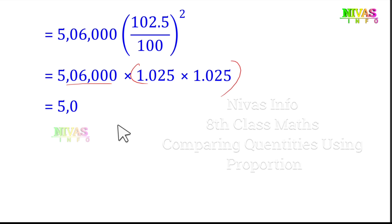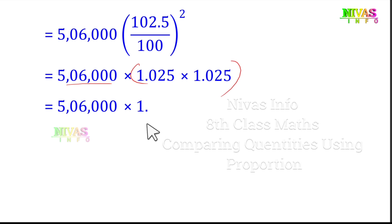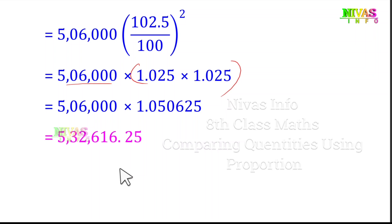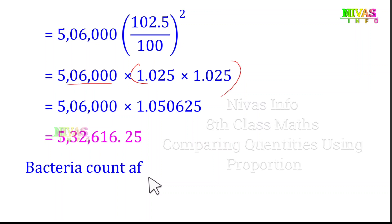We compute 5,60,000 into 1.050625, which gives us 5,88,348. After 2 hours, the bacteria count is 5,88,348 — wait, the result is 5,32,616.25. This is the bacteria count after 2 hours.